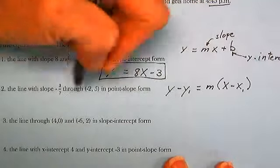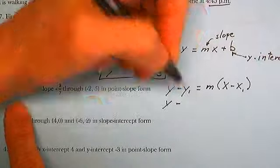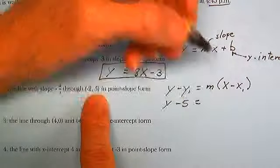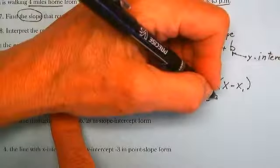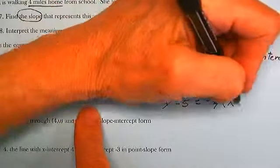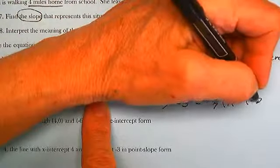So, here, y minus y1 is 5 is equal to the slope negative 3 sevenths times x minus x1, which is negative 2.